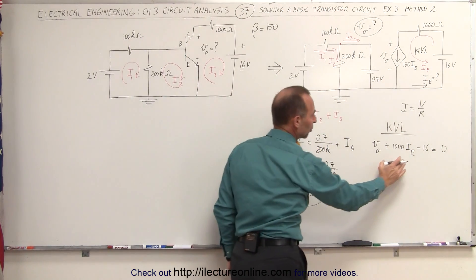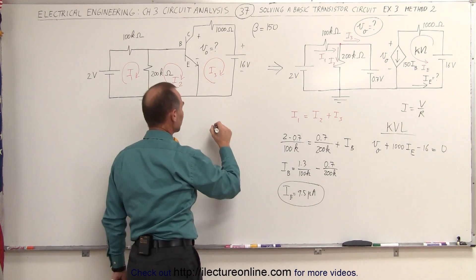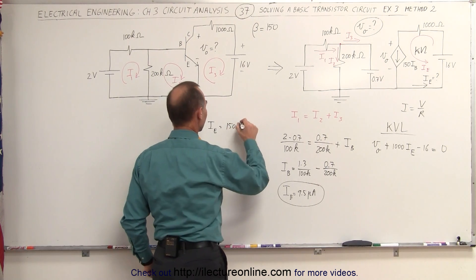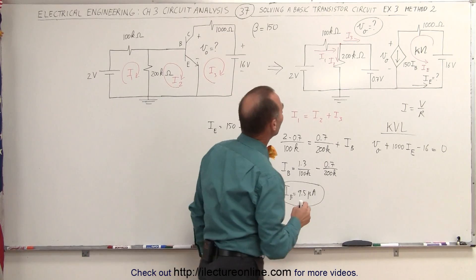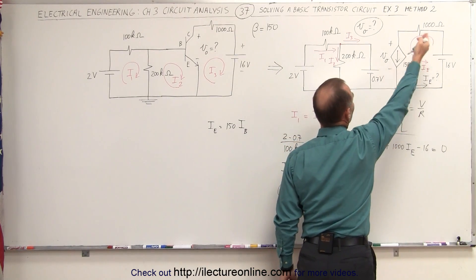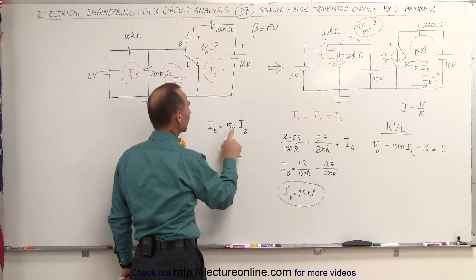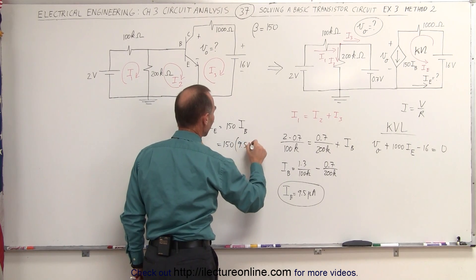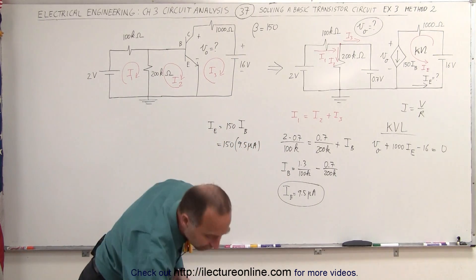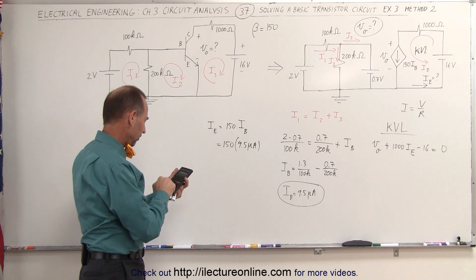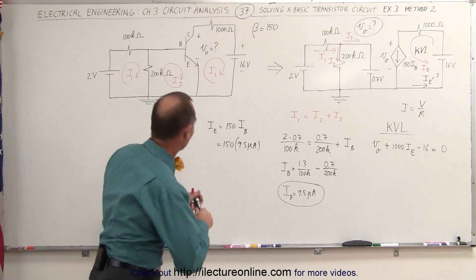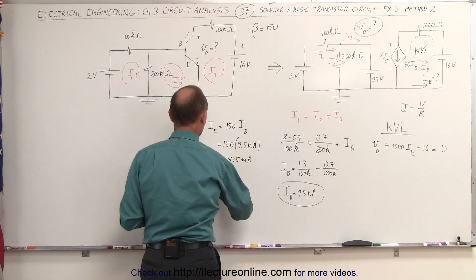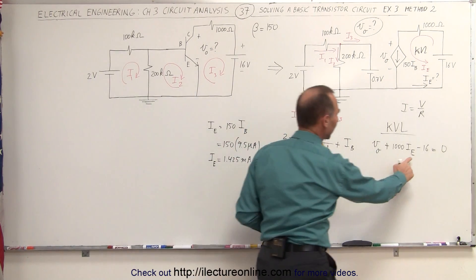Now I need to find a relation between the emitter current and the base current. We know that the emitter current I sub E is equal to 150 times the base current. Now let's see if they're in the same direction — we have the base current coming in this way, and I sub E coming that way, so that's the same direction. I sub E equals 150 times I sub B, that's equal to 150 times 9.5 microamps, and let's figure out what that is equal to — times 150 equals 1.425 milliamps for the current, that's equal to 1.425 milliamps I sub E.